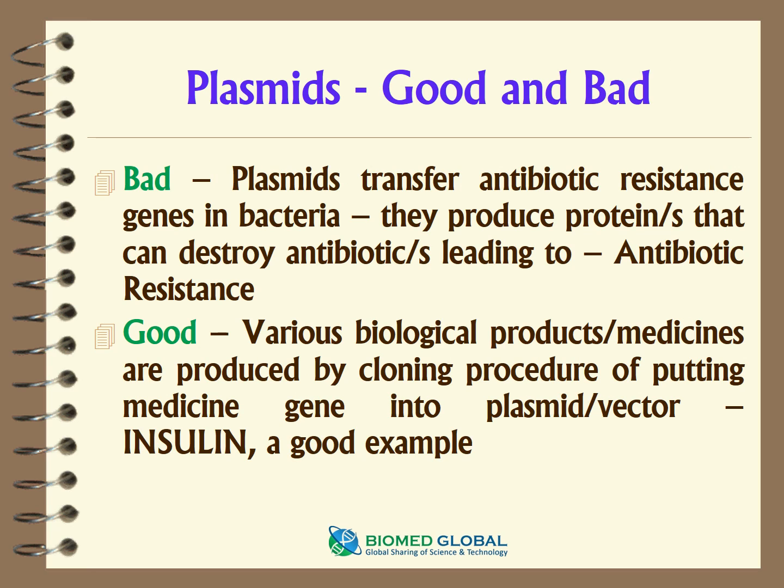Let's conclude this presentation with one bad and one good aspect of plasmids. The bad: plasmids can transfer antibiotic resistance genes in bacteria, producing proteins that destroy antibiotics — a major healthcare issue. The good: various biological products including medicines are produced by cloning procedures, by putting a medicine gene into a plasmid that becomes a vector. Insulin production is a good example.